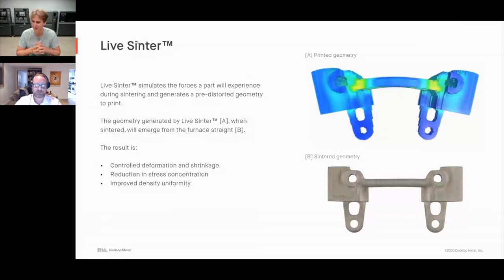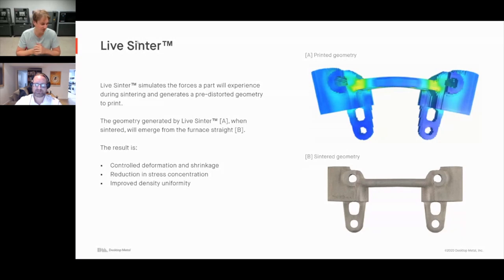This really helps us achieve even better than 1% tolerance, especially for challenging geometries. It looks a little funny when you print them — you're thinking that's going to shrink to that? — but then you put it in the furnace and the part comes out beautiful and straight. It's a really cool software product, unique to Desktop Metal.